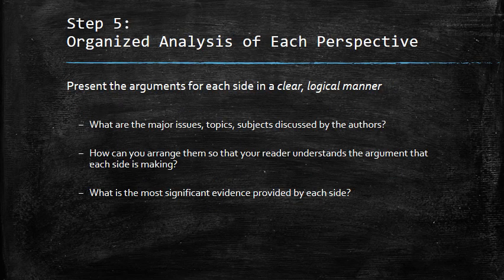Now we get into the process of organized analysis of each perspective. We want to present arguments for each side in a clear, logical manner. Ask yourself: what are the major issues, topics, and subjects that come up over and over again throughout all the authors on each side? How can you arrange those topics so your reader understands not just what each individual article is saying, but how the perspective as a whole takes shape? Decide what's the most significant evidence provided by each side, because that's the evidence you're going to cite in your analysis.